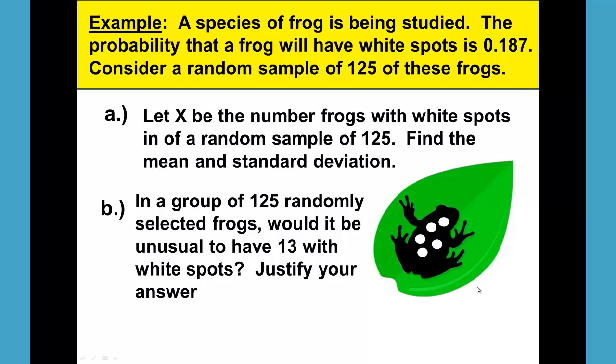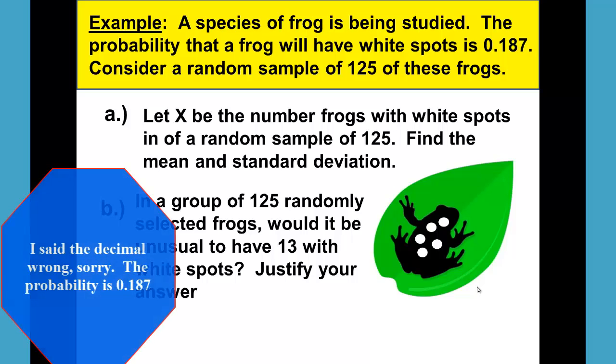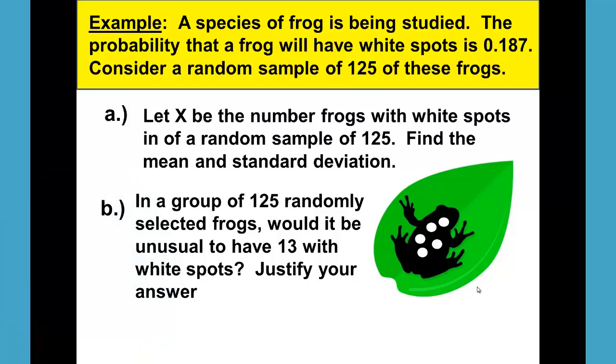A species of frog is being studied. The probability that a frog will have white spots is 0.187. Consider a random sample of 125 of these frogs.